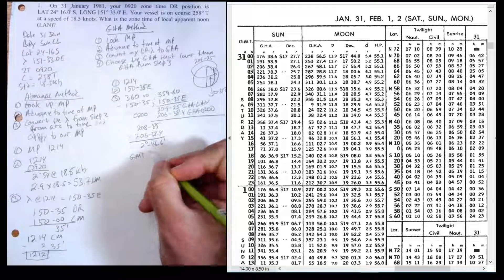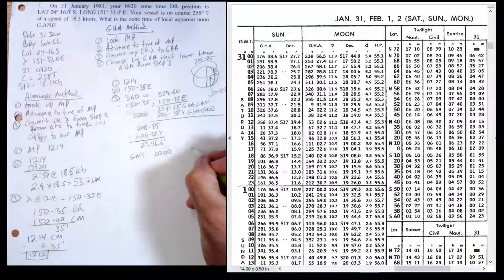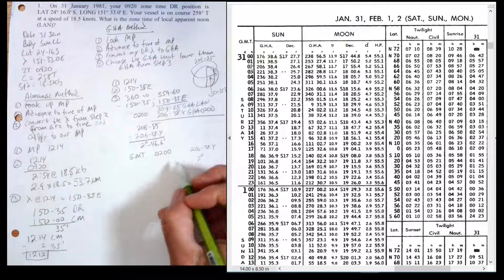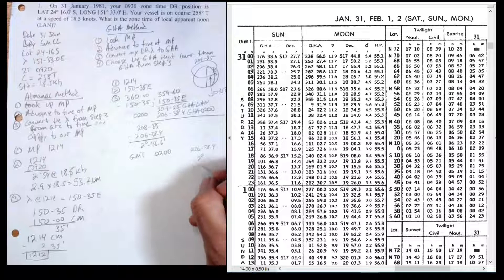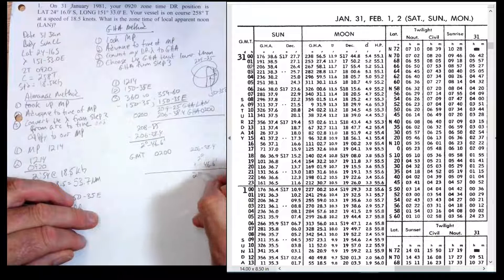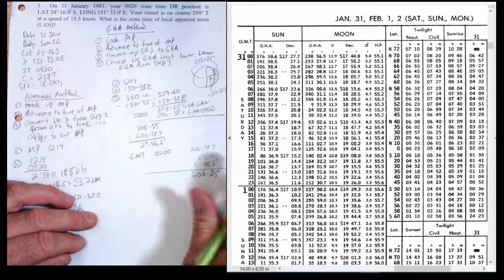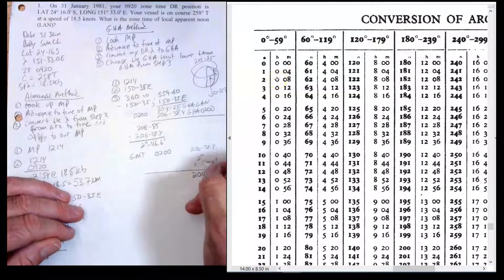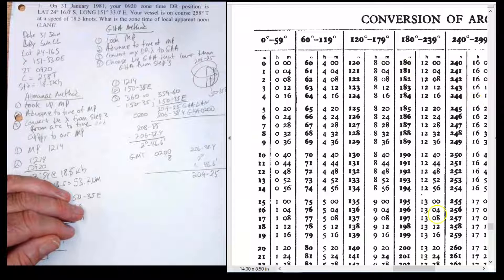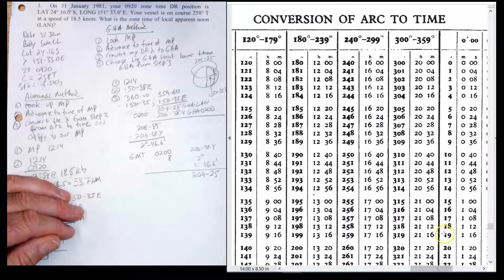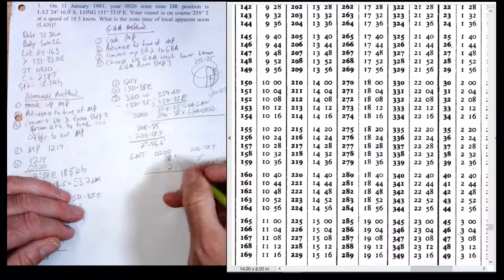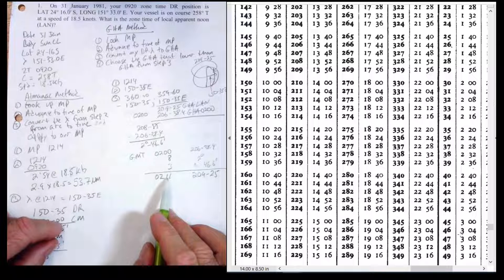Now I convert 2°46.6' to time using arc-to-time tables. Two degrees equals 8 minutes of time. For 46.6 minutes of arc — scrolling to 46 — that's 3 minutes and 4 seconds, essentially 3 minutes. Eight plus three is 11 minutes. So at 0211 GMT on January 31st, the sun will be at GHA 209°25', which equals 150°35' East — that will be meridian passage.